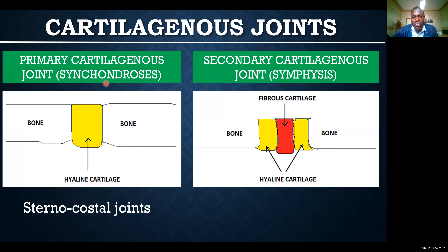Synchondrosis allows some level of movement that fibrous joints would not accommodate, though there is still some degree of movement in fibrous joints. Cartilaginous joints are more mobile compared to fibrous joints. Synovial joints are even more mobile compared to cartilaginous joints. Even among cartilaginous joints, primary cartilaginous joints are less mobile compared to secondary cartilaginous joints.